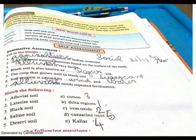Match the following: Alluvial soil - delta region. Laterite soil - iron oxide. Black soil - cotton. Saline soil - arid. Desert soil - casuarina region.